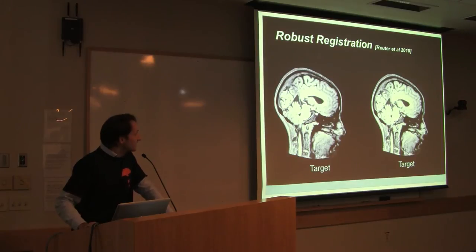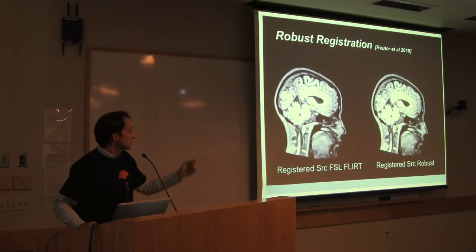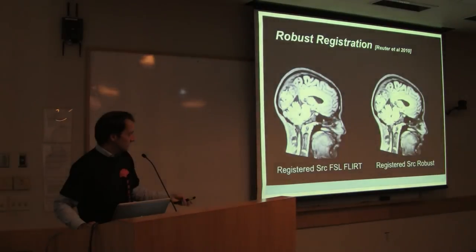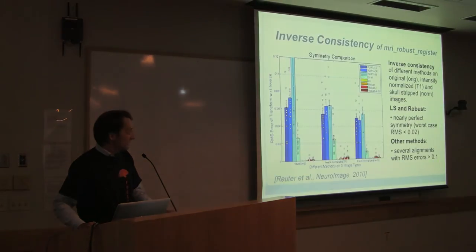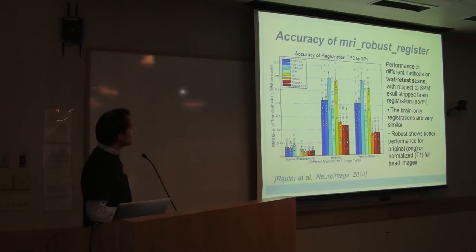Comparing this to FLIRT — which is not robust — you can see that FLIRT doesn't achieve accurate registration of the brain when local changes are present. The robust registration, however, finds a very accurate registration despite changes in the neck, jaw, and cropping planes. The paper on this demonstrates it is inverse consistent and more accurate than both FLIRT and SPM registration tools.